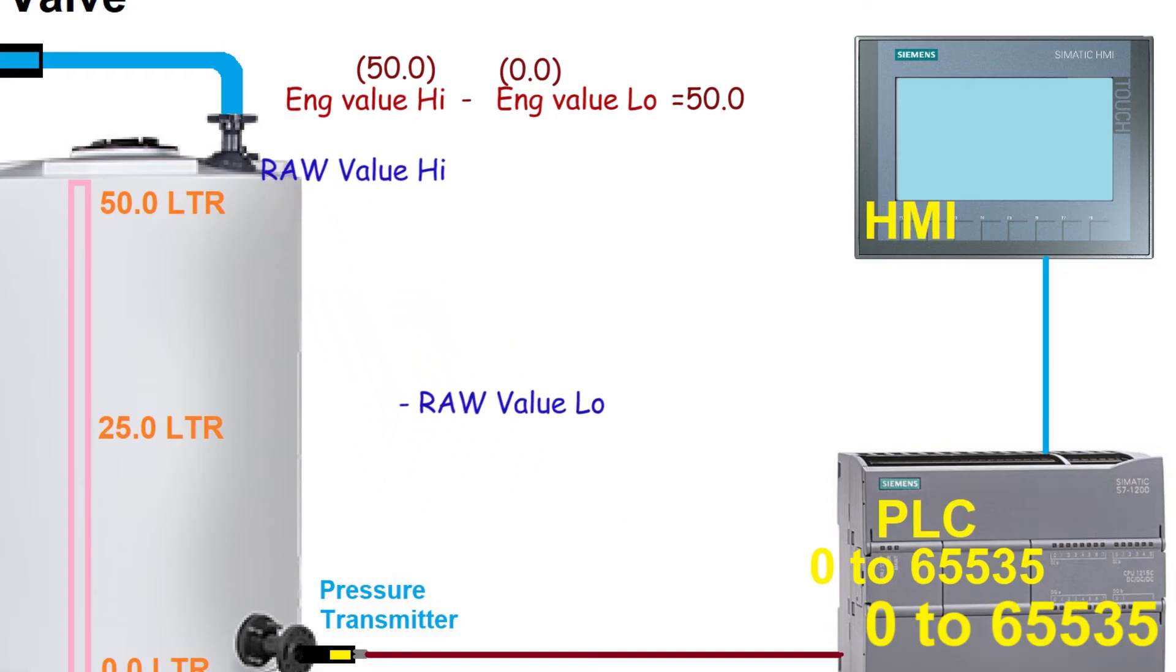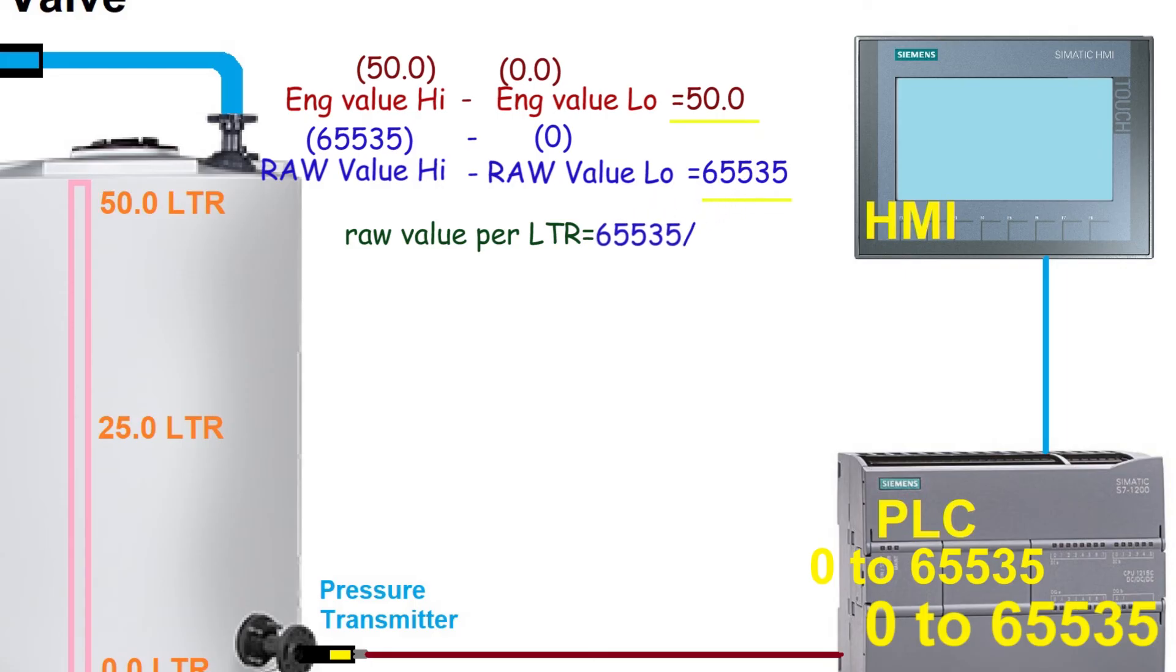Then we will minus raw high value with raw low value which is 65535 minus 0 equals 65535. From these two values we can calculate raw value count per liter which is 65535 divided by 50 and it is equal to 1310.7.